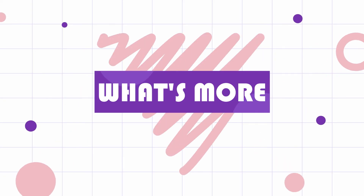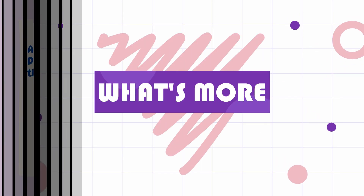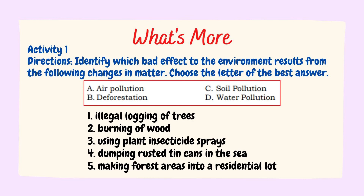What's more? Activity number 1. Direction: Identify which bad effect to the environment results from the following changes in matter. Choose the letter of the best answer. A — Air pollution, B — Deforestation, C — Soil pollution, D — Water pollution. You may write your answer in your notebook.